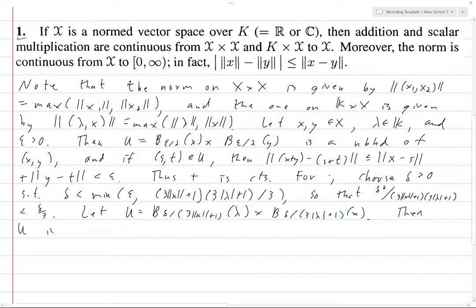Then U is an open neighborhood of (lambda, x) in K cross X. So remember, we're looking at lambda and x in K cross X, and we want to consider another point in this neighborhood and show that it's close with respect to multiplication.